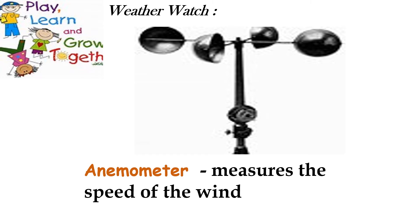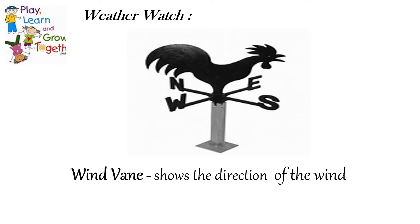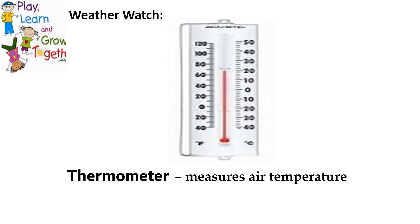You have the wind vane, which is also very well known. It shows the direction of the wind. Looking at the arrow, you can see where it points — east, north, south, or west — and by the direction of the arrow you can tell the direction of the wind. Then we have the thermometer, which measures air temperature.